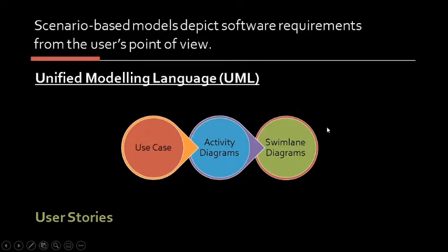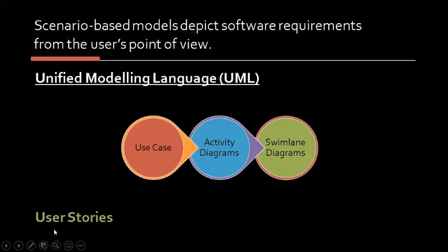The first three tools are part of the Unified Modeling Language, or UML. UML is a standardized modeling language enabling developers to specify, visualize, construct, and document artifacts of a software system. We also have user stories, which we discussed in our Agile process model, but I will try to discuss it again later.